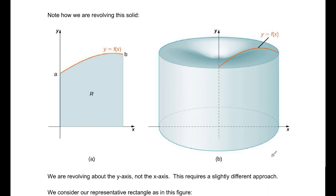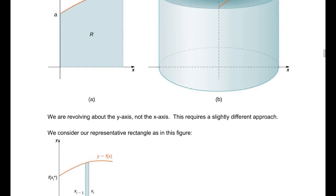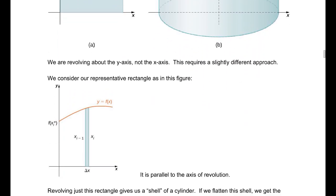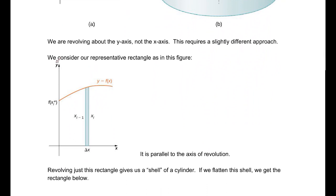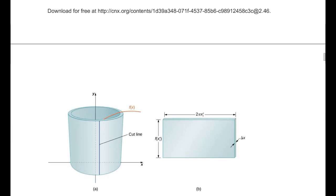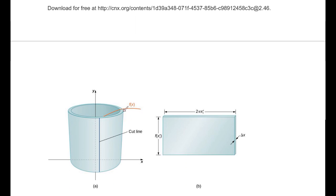Our representative rectangle looks like this. Again, from that region R, we have this representative rectangle. What we are doing is going around the y-axis — we are taking this and swinging it all the way around. What actually happens is you form a cylinder. This gives us a shell of a cylinder. If we take that representative rectangle and wrap it around the y-axis, it forms this shell. If we flatten that out — cut it and flatten it out — we get something that looks like a rectangular prism.